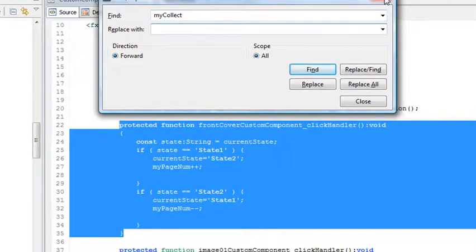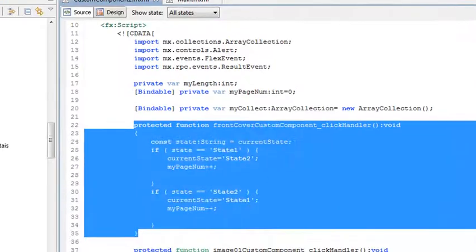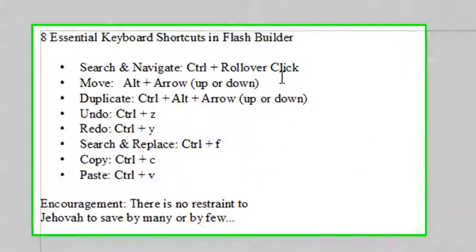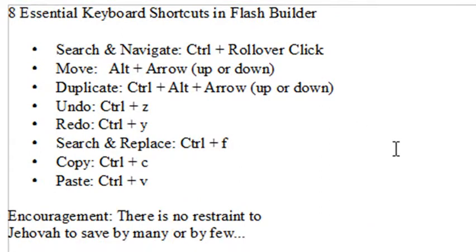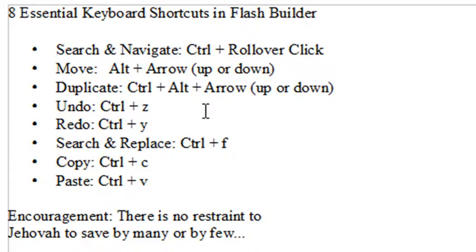I've given you all the basic keyboard shortcuts. If you learn and memorize these eight keyboard shortcuts, it will save you tons of time. Let's go over them again: Control plus rollover — navigating and searching. Alt plus arrow — moving highlighted code. Control plus Alt plus arrow — duplicate. Control Z and Control Y — undo and redo. Control F — search and replace. Control C and Control V — copy and paste. I hope this was helpful. This was Mike Lively — thanks for listening.